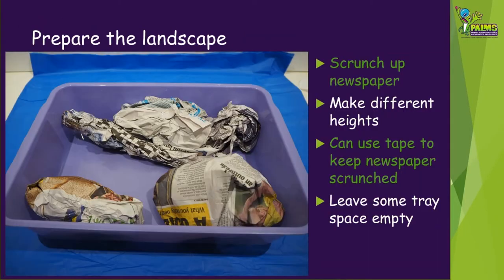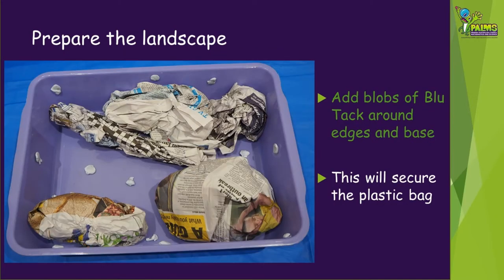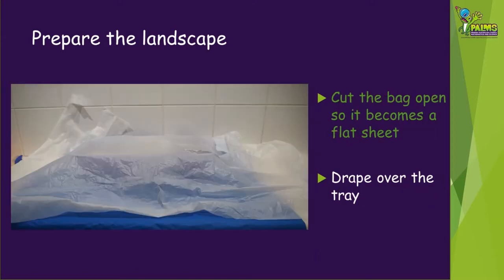The first thing you're going to do is prepare your landscape. Scrunch up some newspaper into different shapes and sizes to make different heights — you're trying to make some hills and some valleys. You can use tape to keep the newspaper scrunched up. Place it into your kitty litter tray but leave some empty space as well. Add some blobs of blue tack on the base of your tray and also around the edges.